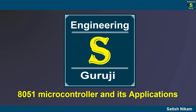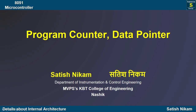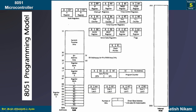Hello students. Welcome back to our channel. In this video, we are going to discuss the program counter and data pointer registers of the 8051 microcontroller. We have already discussed the programming model of 8051 in the previous video, please go through it. In that lecture, we discussed that the 8051 has internal ROM, RAM, and some special function registers. ROM stores the program and RAM stores the data. Special function registers are used for some special functions, out of which the program counter and data pointer registers we are going to discuss today.